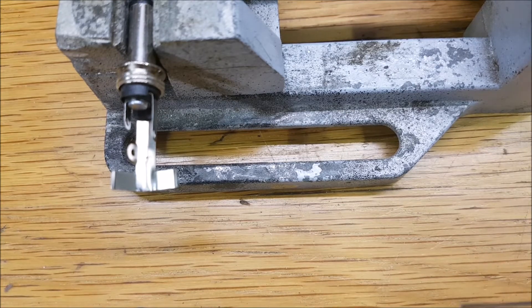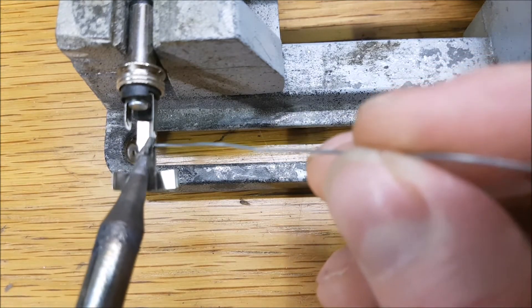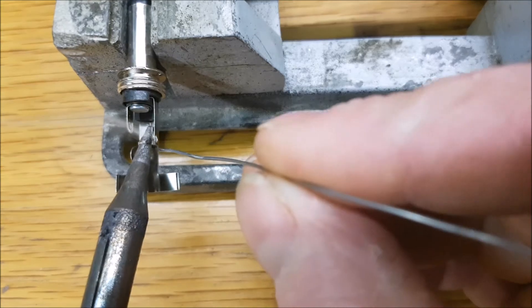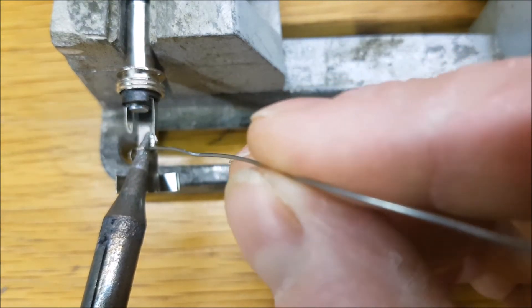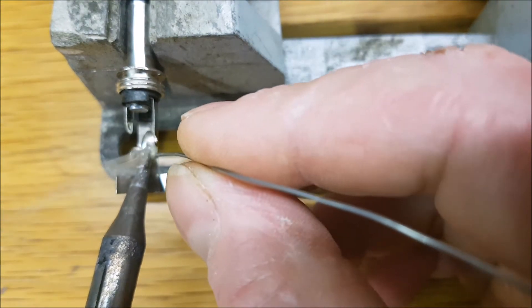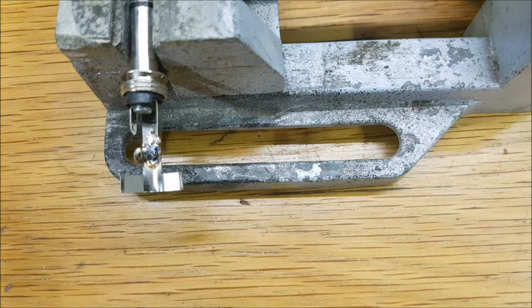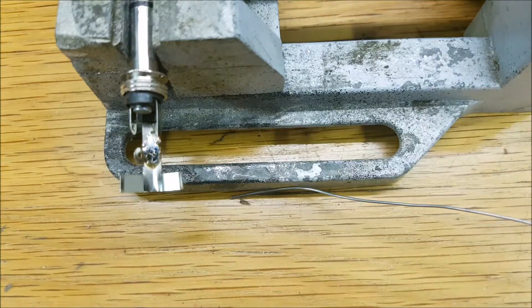So I always start off by putting some solder along in the bottom where your ground wire is going to go. Just put a nice little puddle there in the bottom like that.